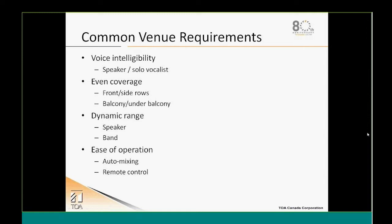Common venue requirements: voice intelligibility with the speaker or any solo vocalist, even coverage including front side rows, and balconies above or below. Dynamic range — is it just a person speaking or is there a band? That tells us whether we have to add larger speakers for low frequency or potentially subwoofers. Ease of operation is definitely key — do you need auto-mixing in the DSP head end, and do you need remote controls to make adjustments?